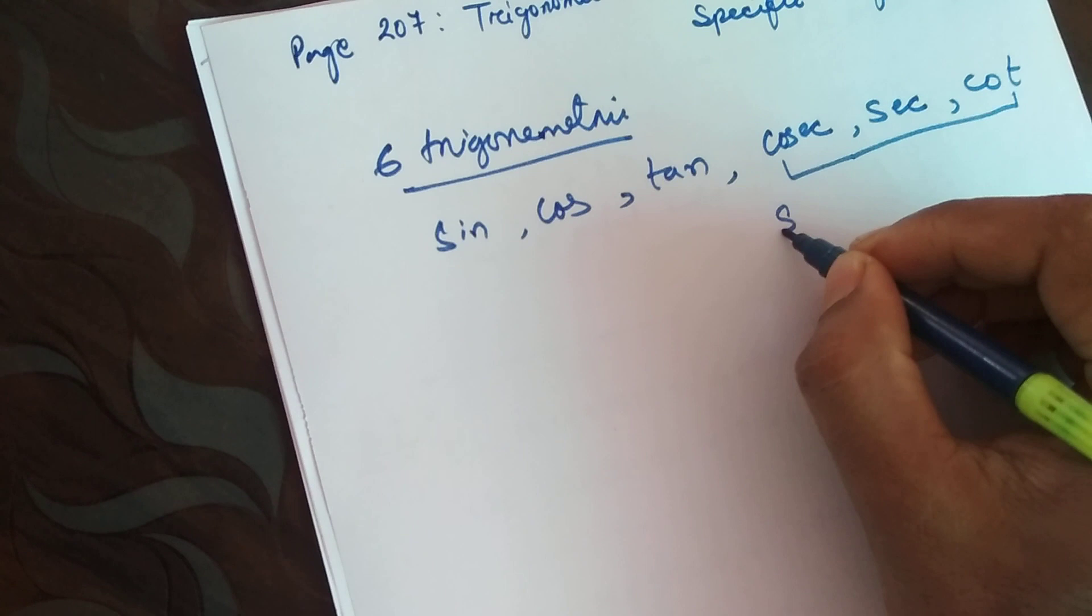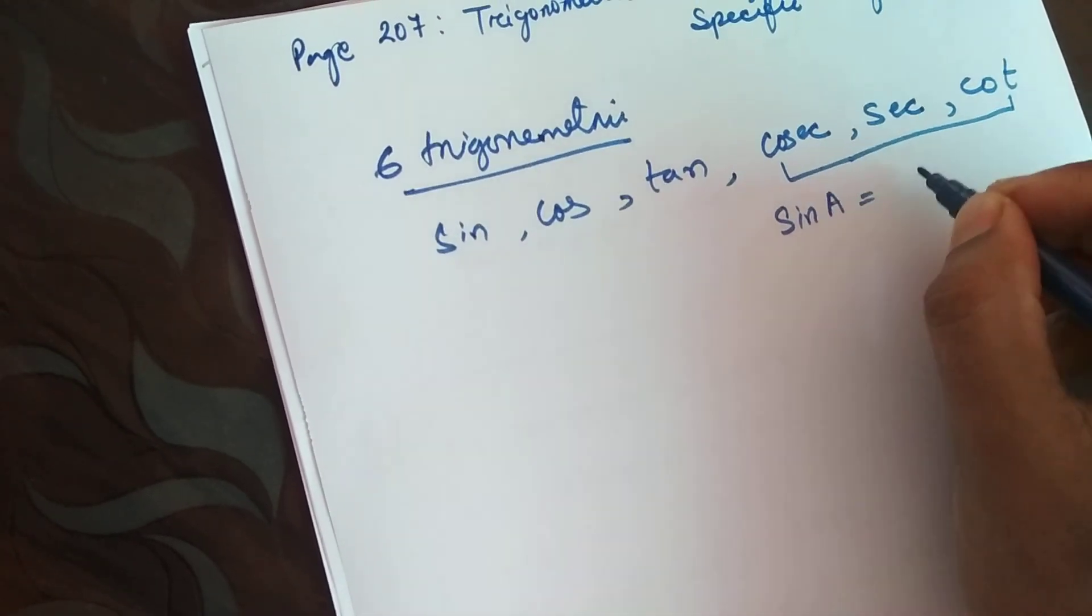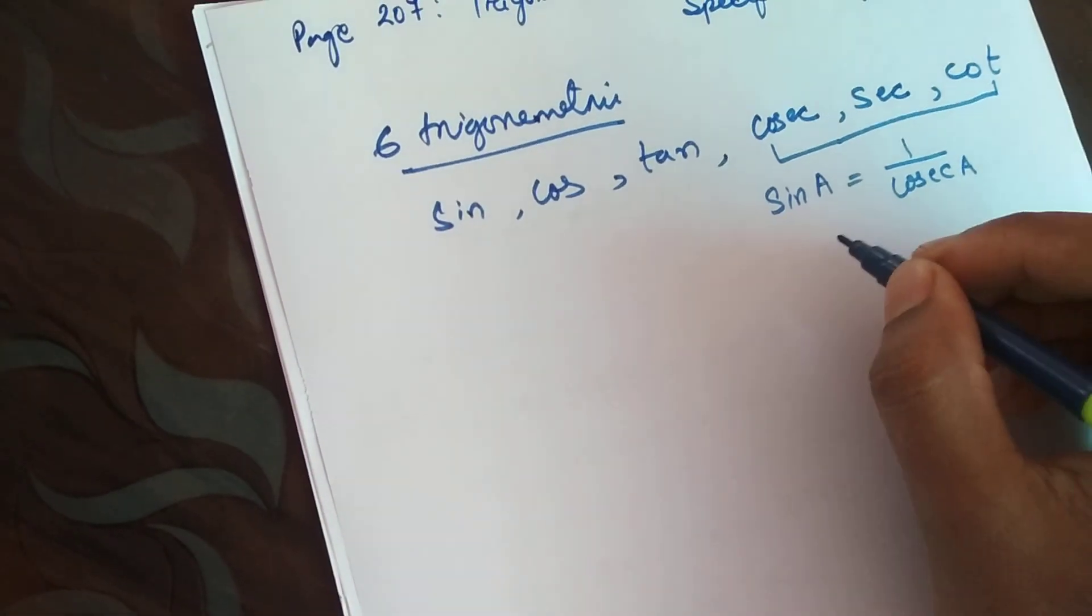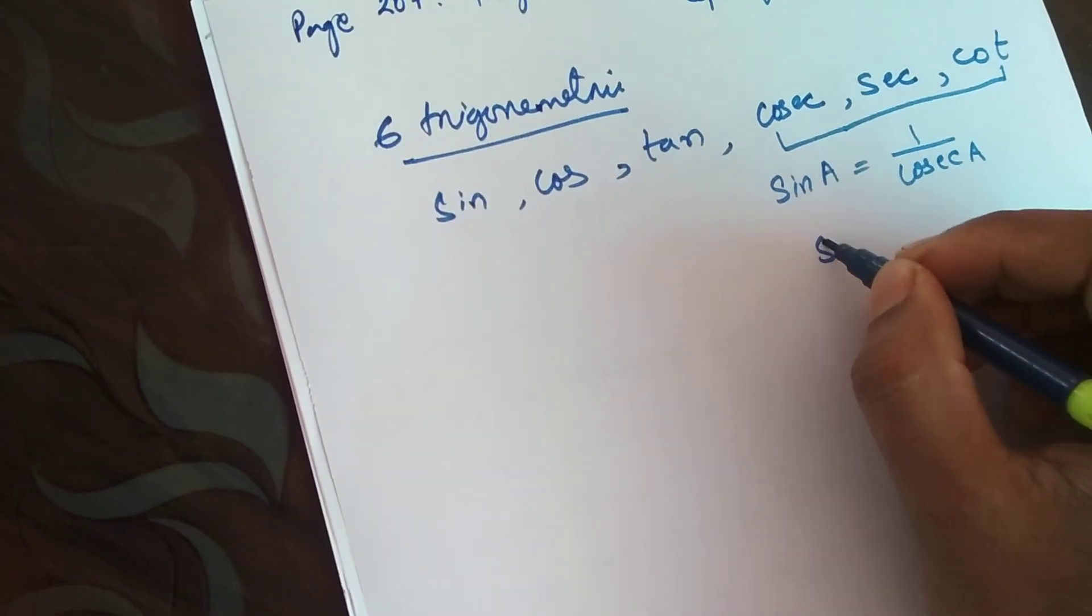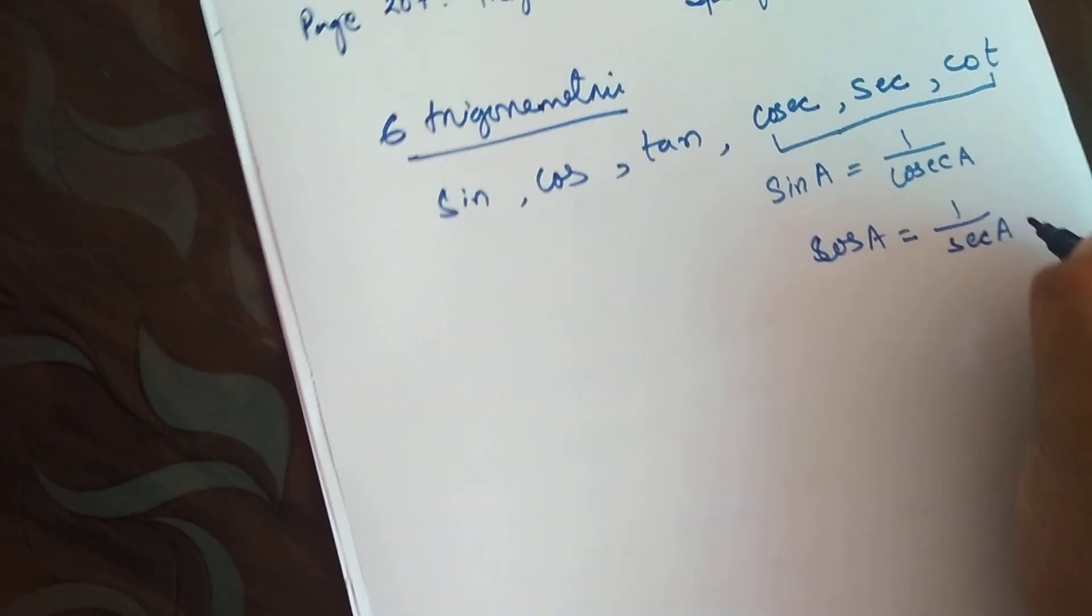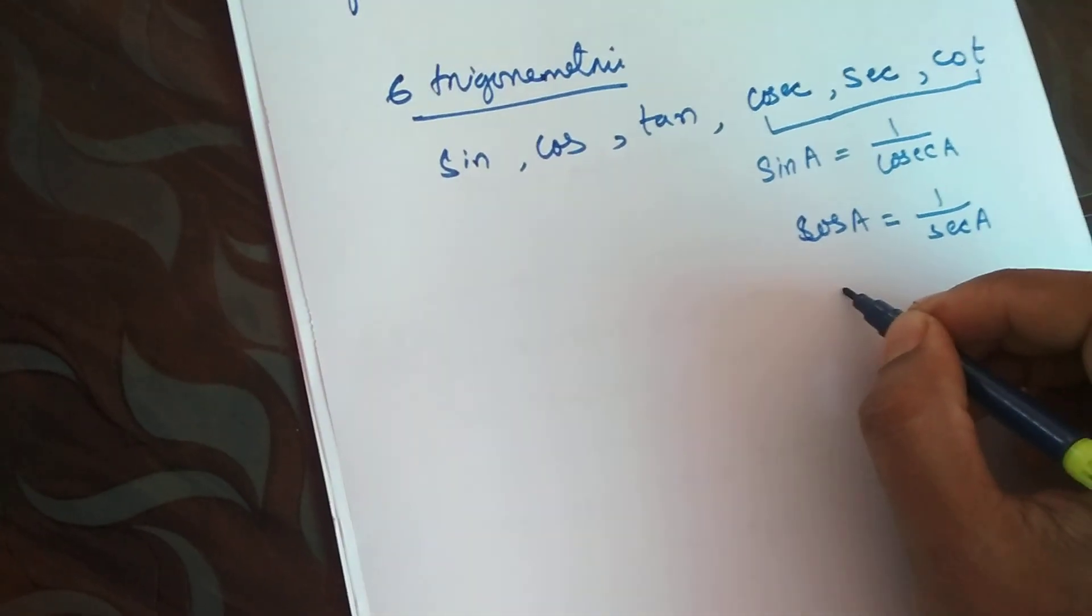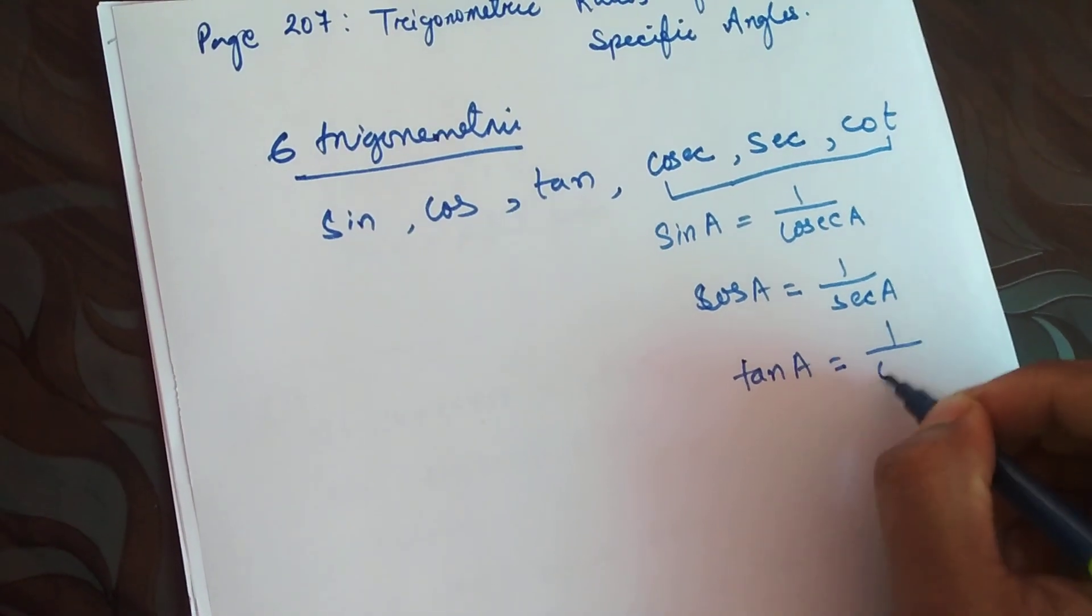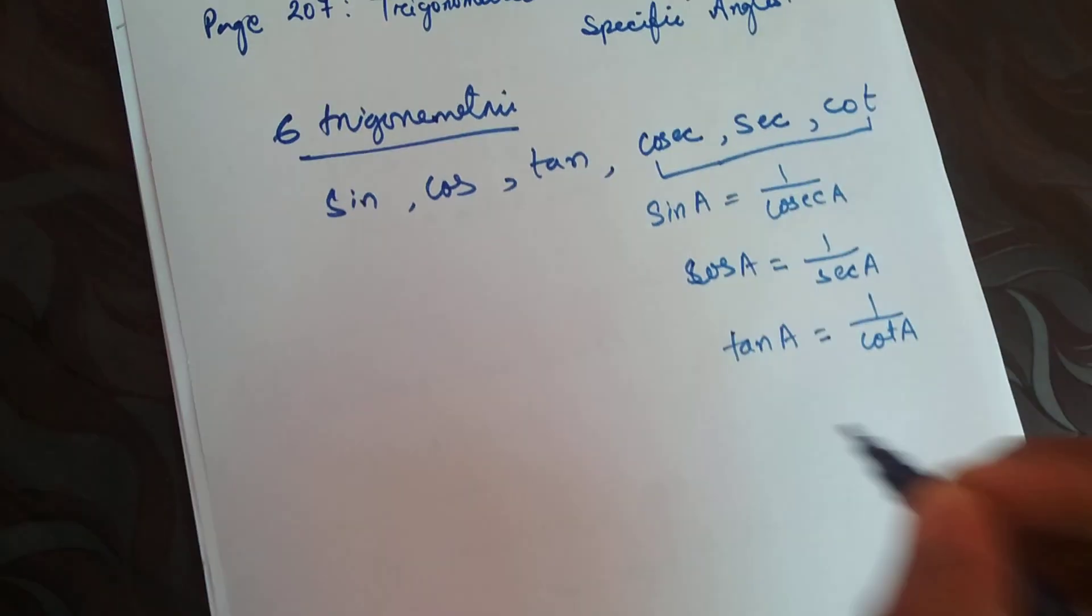That is, for example, sine of A equals 1 by cosec A - that's the reciprocal terms. Cos of A equals 1 by sec of A, and tan of A equals 1 by cot of A.